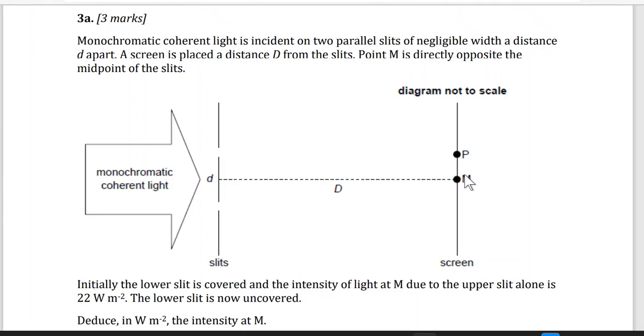We'll have bright, dark, bright, dark fringes and so on. The distance from the slit to the screen is capital D. And here we have two points, point M and point P. M is directly opposite to the midpoint of the slit.